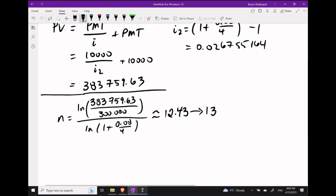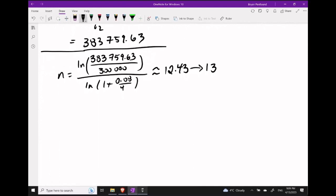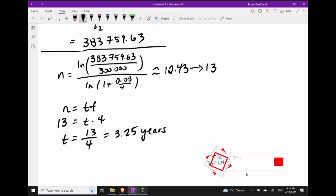To finish the question, we apply our formula that N equals T times F. So if N equals 13 and the compounding frequency is 4, we can solve for how long it will take by dividing 13 by 4. This gives us that we need to wait about 3.25 years before we can start giving away these payments of $10,000.